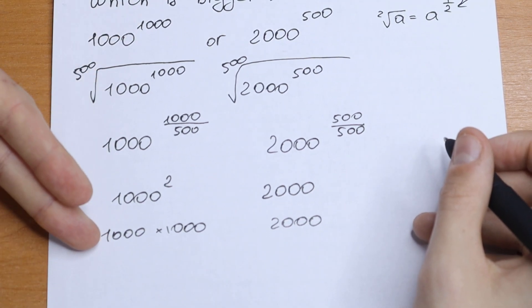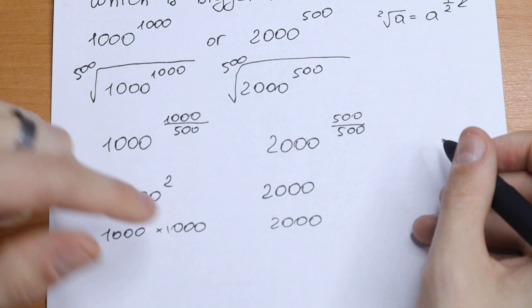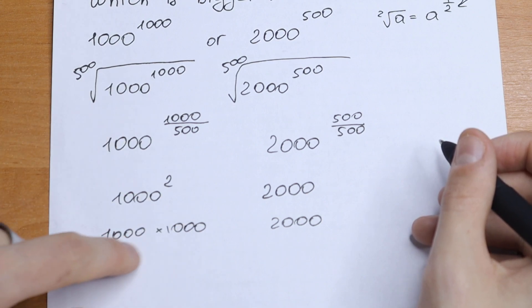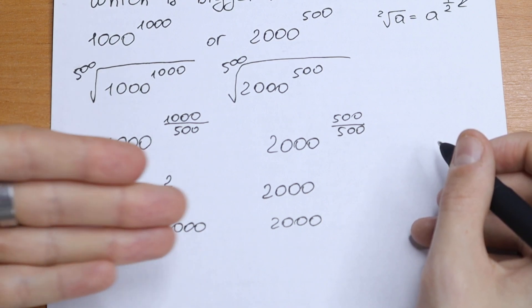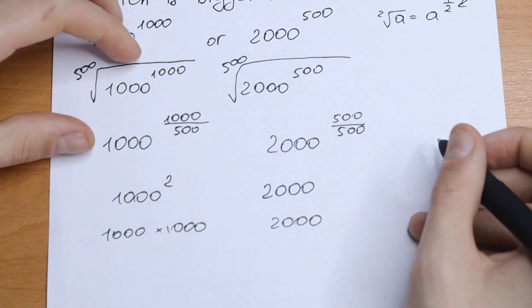Of course as you can see this one on the left will be bigger than that. But how can we prove this? We have 1000 times 1000. Of course it will be bigger than this 2000, but how can we prove it?